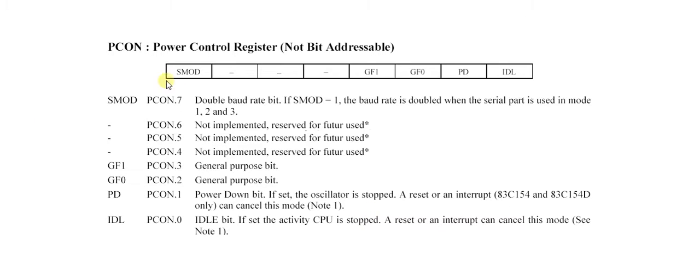As you can see, bit 7 is the SMOD bit. It doubles the baud rate. So if SMOD is equal to 1, then the baud rate is doubled when the serial port is used in mode 1, 2, and 3.